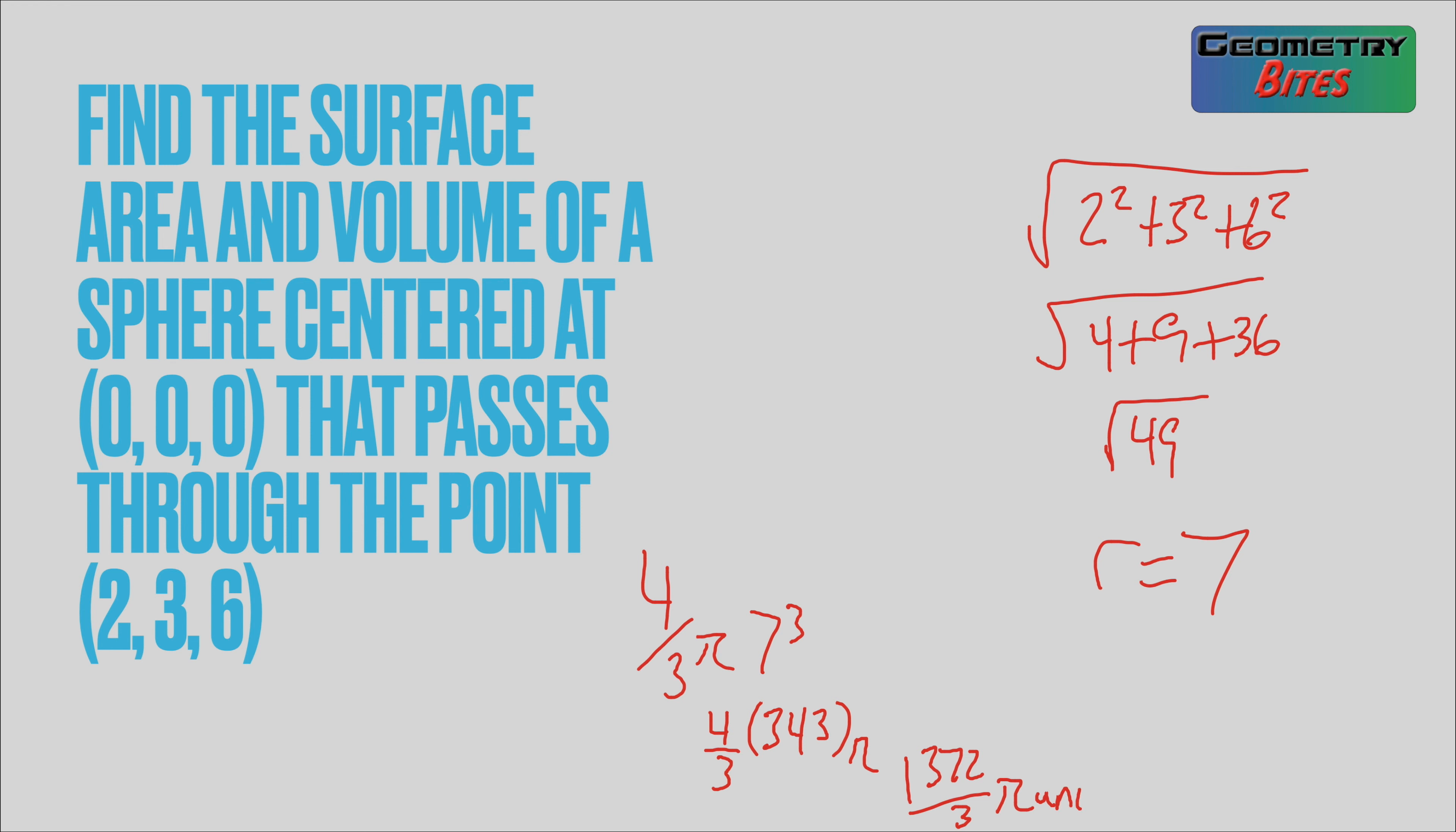And that's technically units cubed. Now the other one is 4 times π r², so 4π times 49. 49 times 4 is 196π units squared. So that's volume and this is surface area.